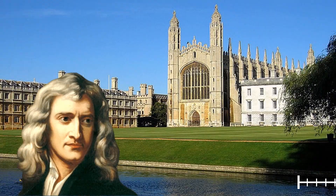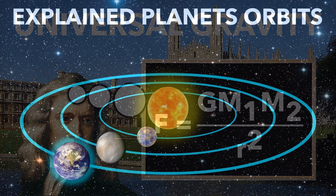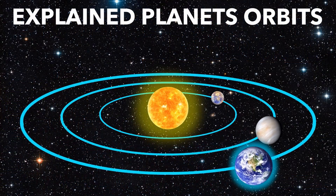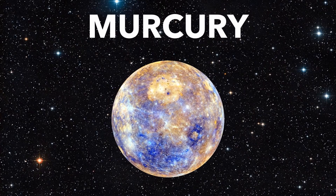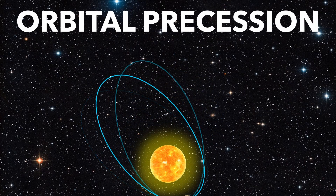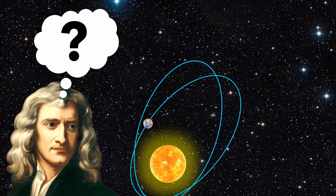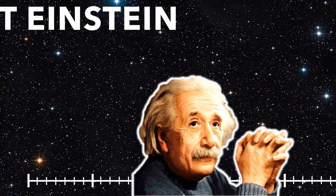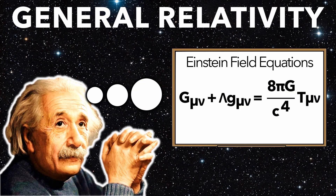Newton's gravity problem. Isaac Newton's groundbreaking theory of gravity explained the orbits of all the planets, apart from the closest planet, Mercury. Mercury's orbit shifted slightly faster than Newton's theory predicted it should. It took 228 years for Einstein to fix the problem with his own theory of gravity, general relativity.